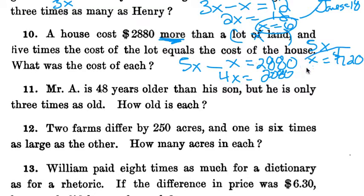We can plug that back into the lot of land. And if we want to find the cost of the house, we know it's 5x. So 720 times 5 is 3,600. And you can go back and check your work: 720 times 5 is 3600, and 3,600 take away 720 is our 2,880. So double check your work and it all works out.